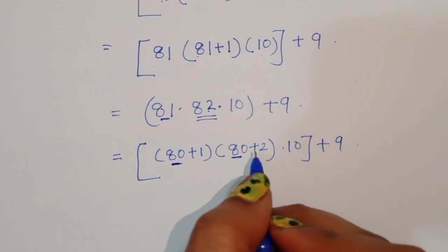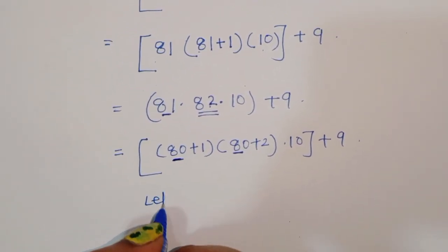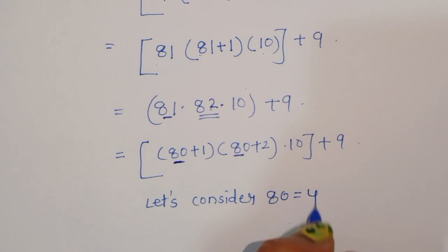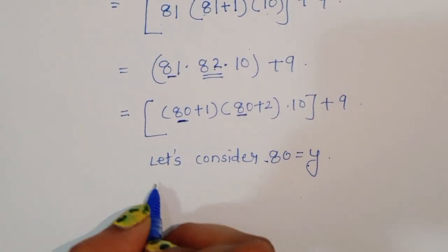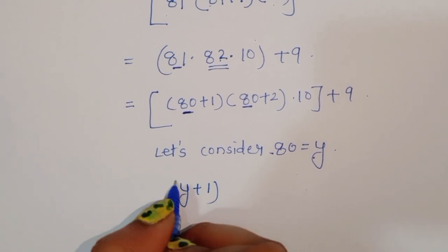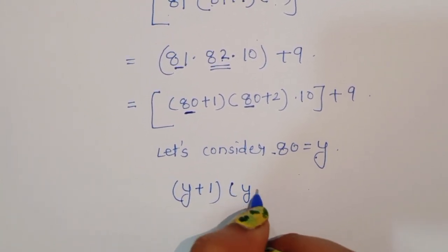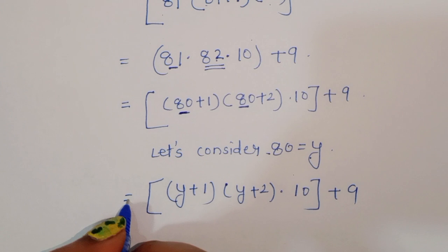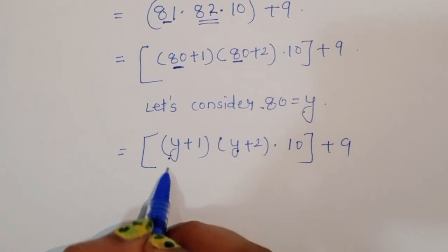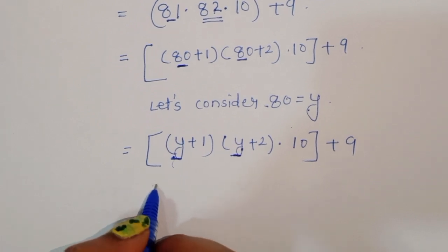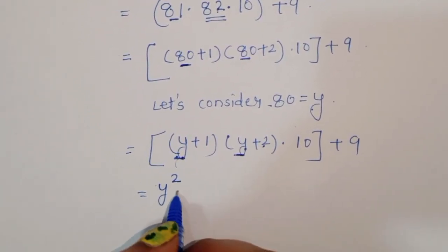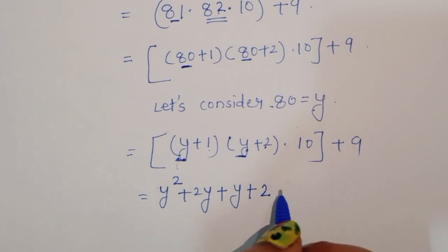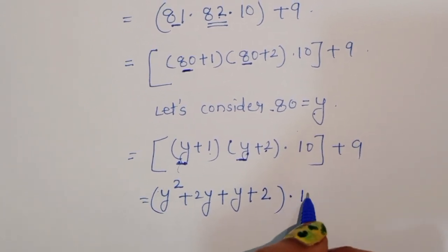We can consider 80 as y. Let y equal to 80. Then we get (y plus 1) times (y plus 2) times 10 plus 9.